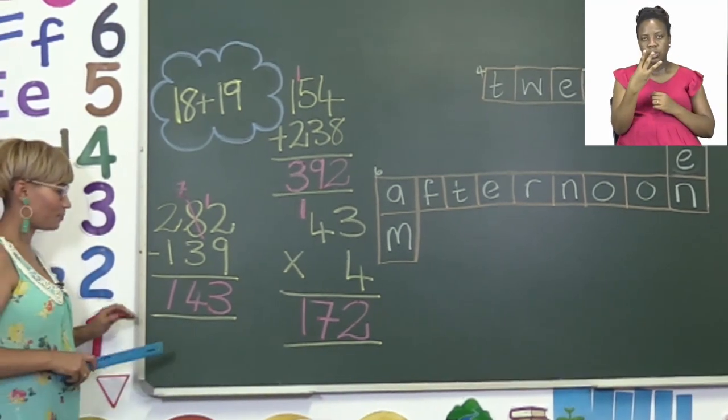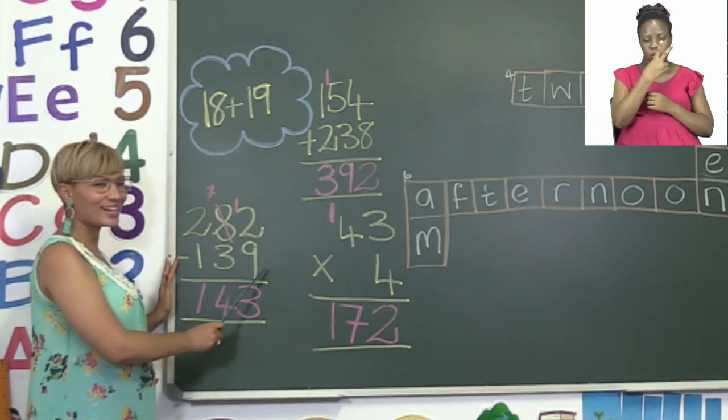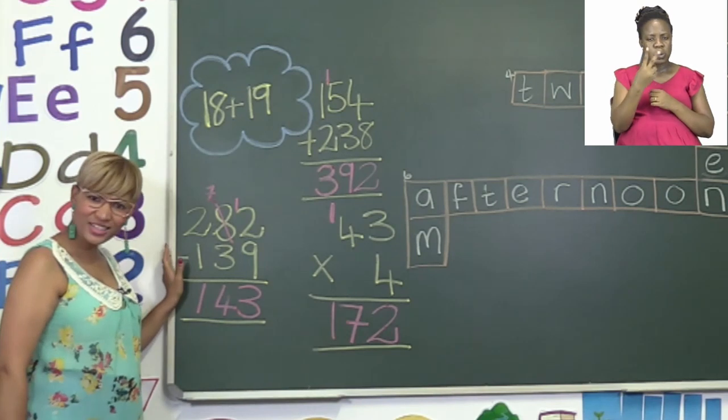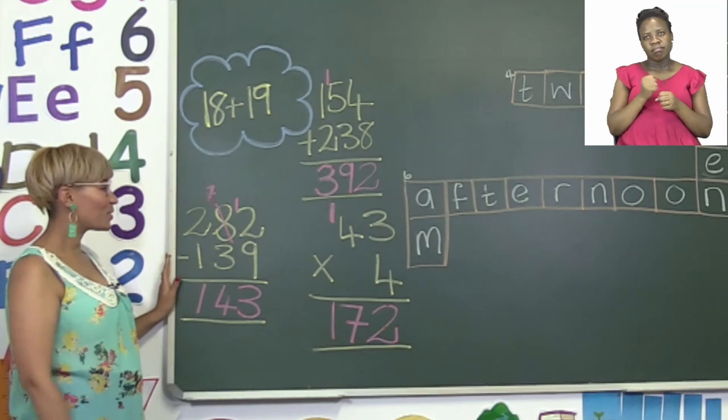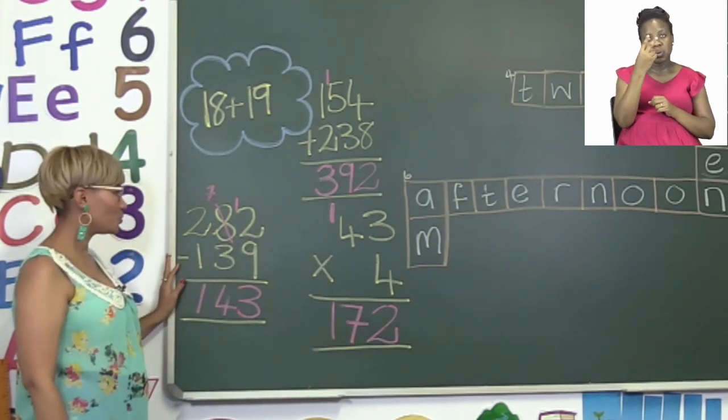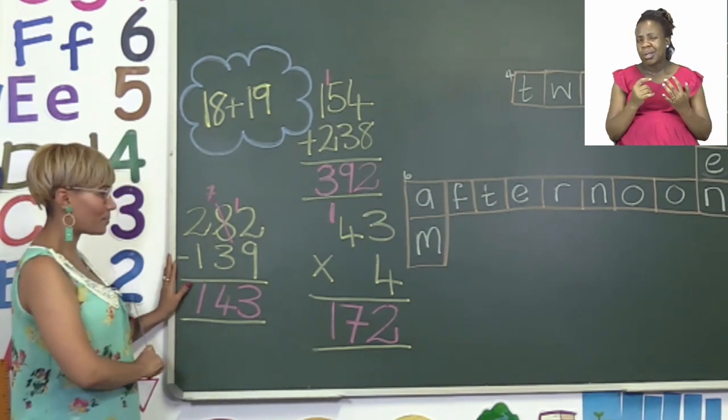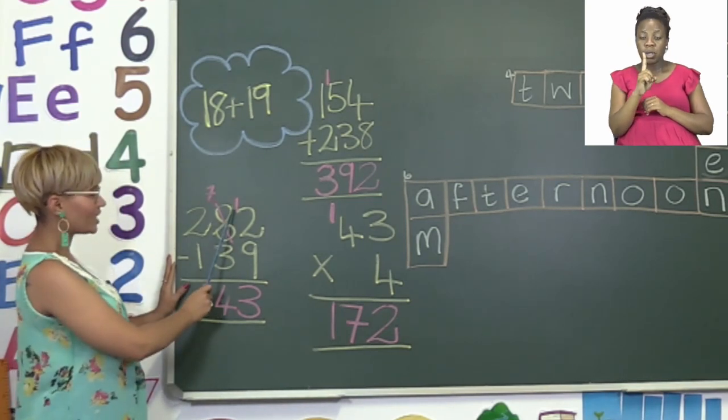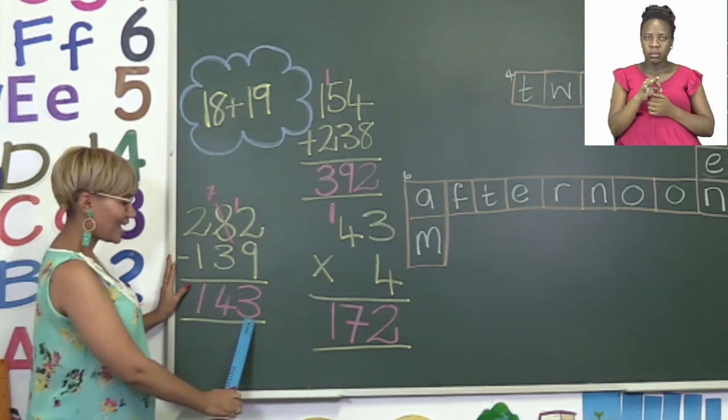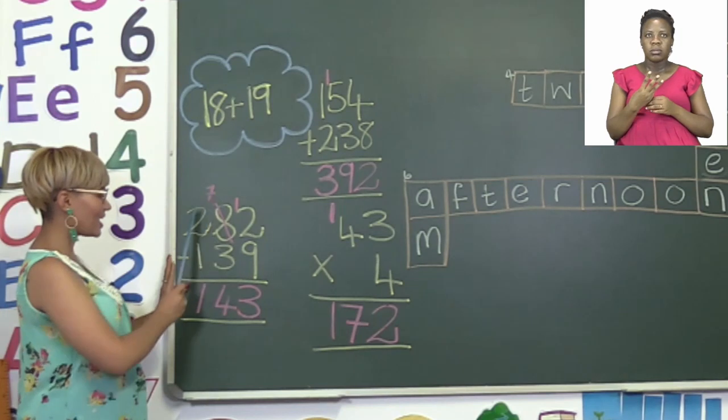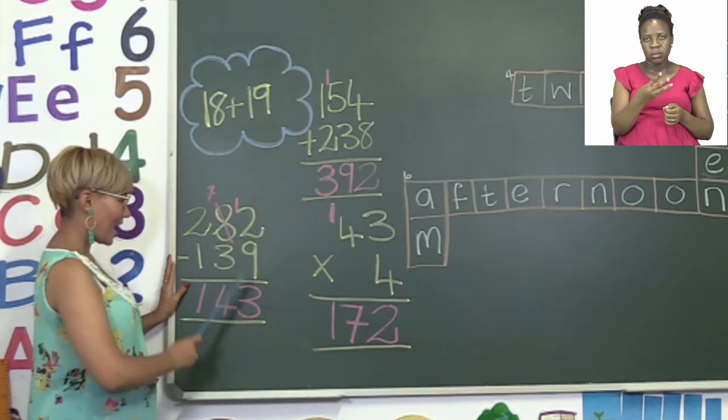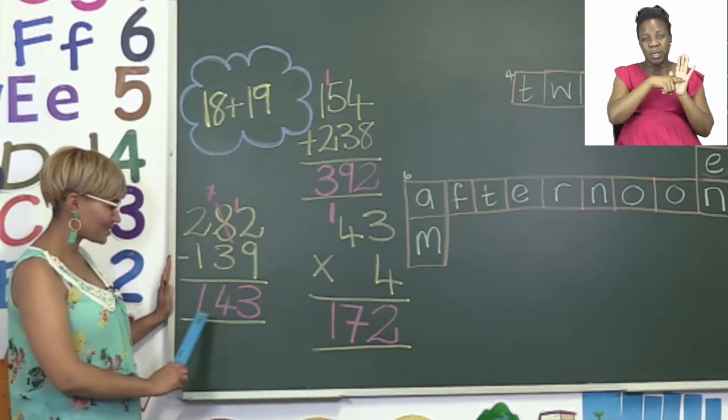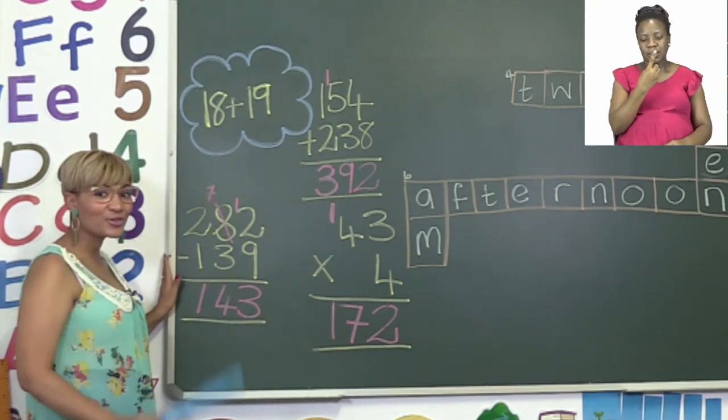Let's try the subtraction sum together. Now here we have 282 minus 139. Once again we start with our units. We say 2 minus 9. Can we minus 9 from 2? No, we can't because 9 is more or bigger than 2. So what do we do now? Now we must go ahead and borrow from number 8. So we borrow 1 and then we have 7 left over. Now we say 12 minus 9, and 12 minus 9 is equal to 3. And then we say 7 minus 3 is equal to 4, and 2 minus 1 is equal to 1. And there we have it boys and girls. Our answer for this sum is 143. And that is how you do your subtraction sums.